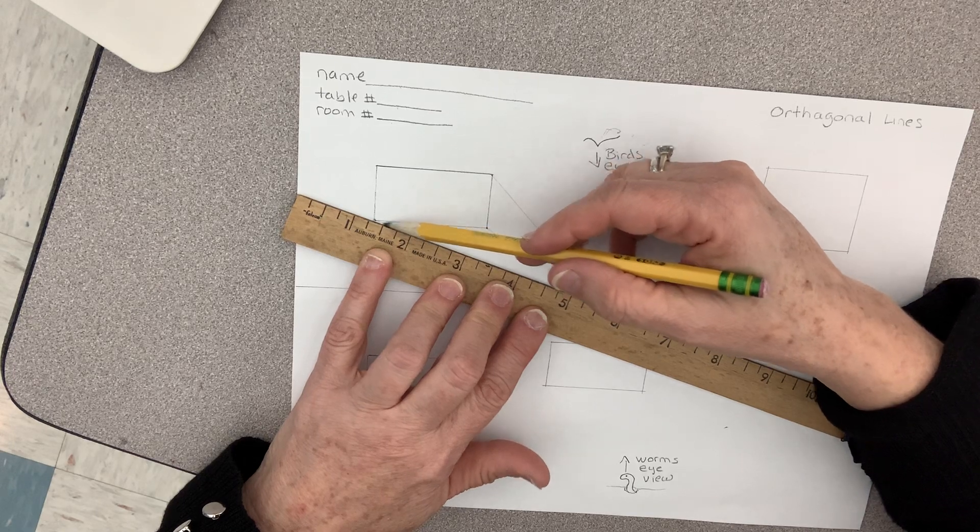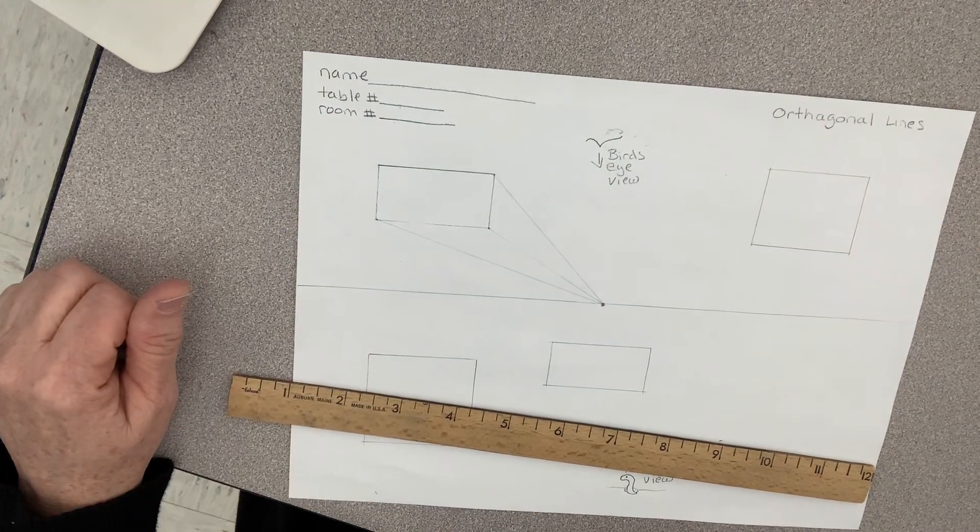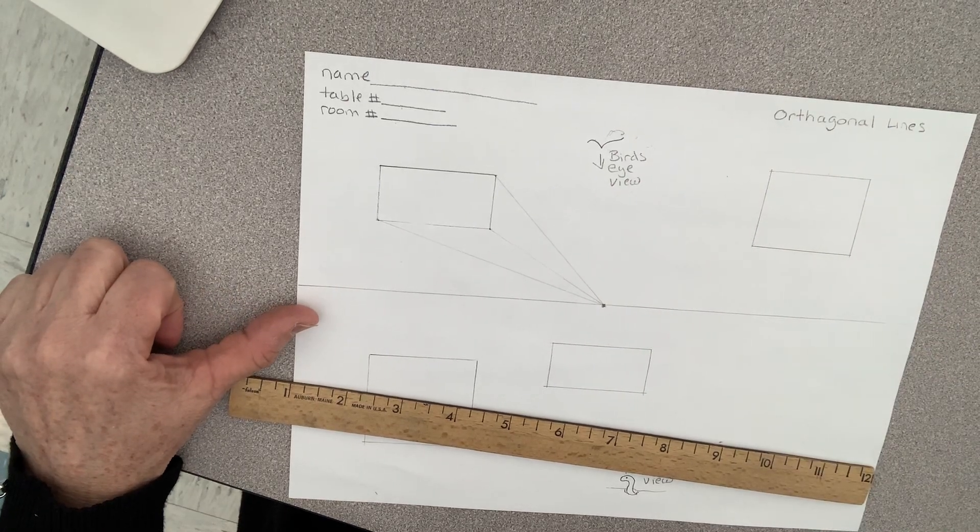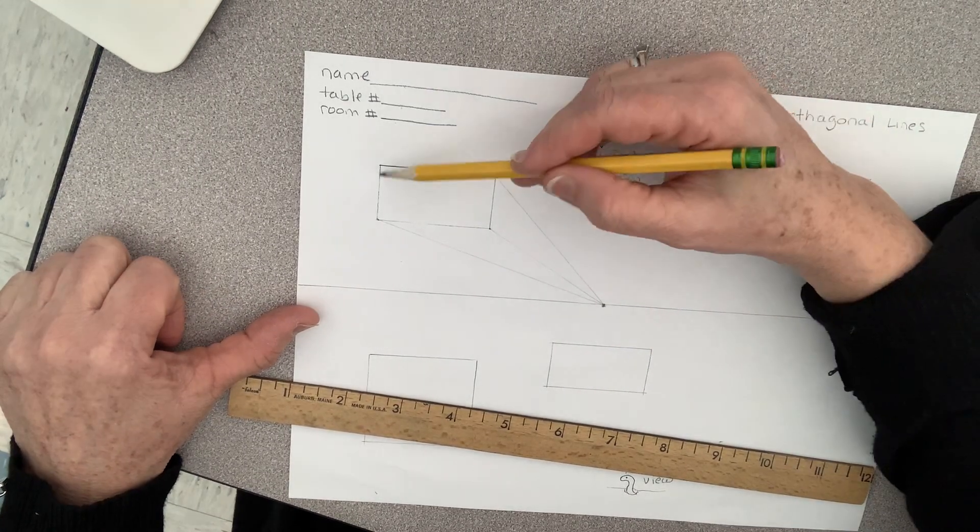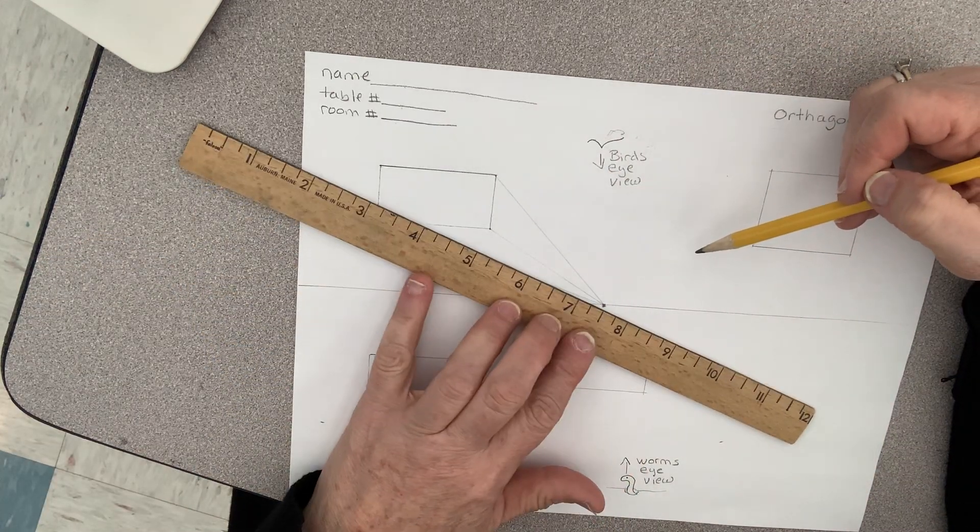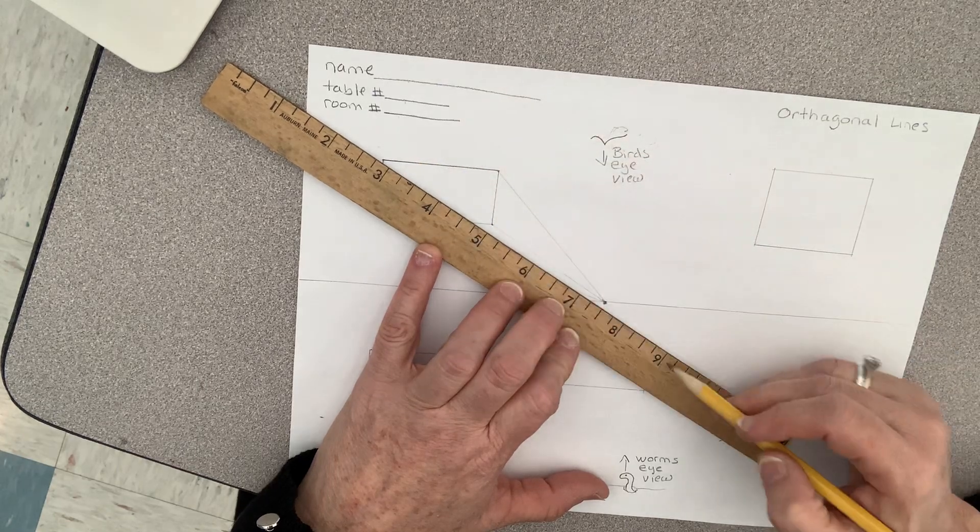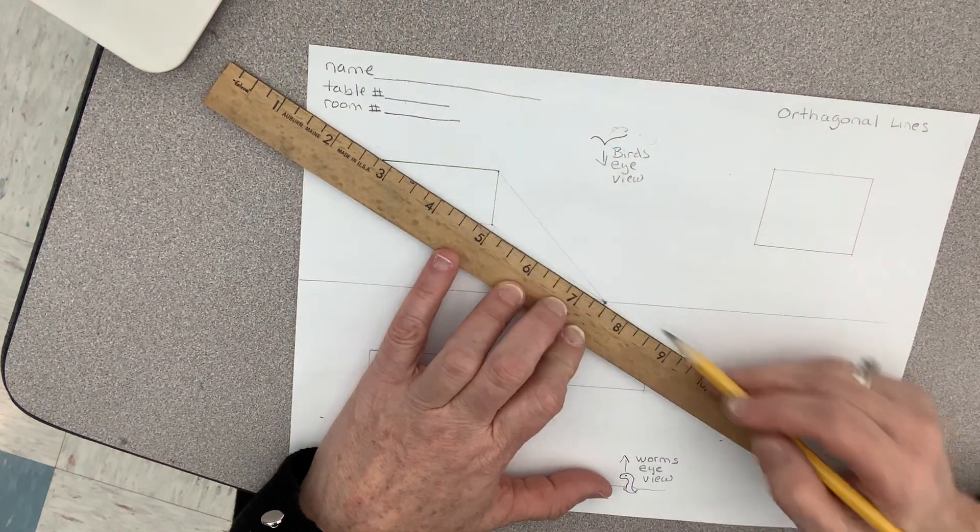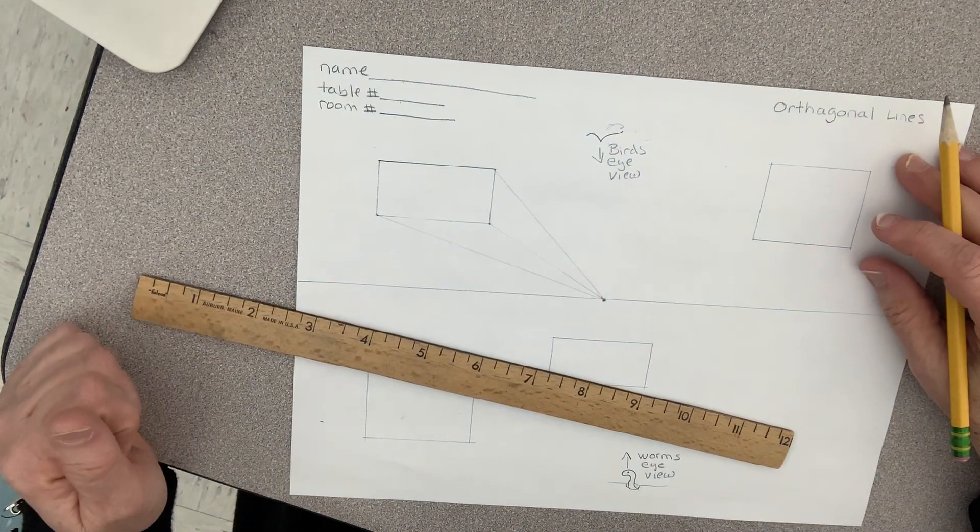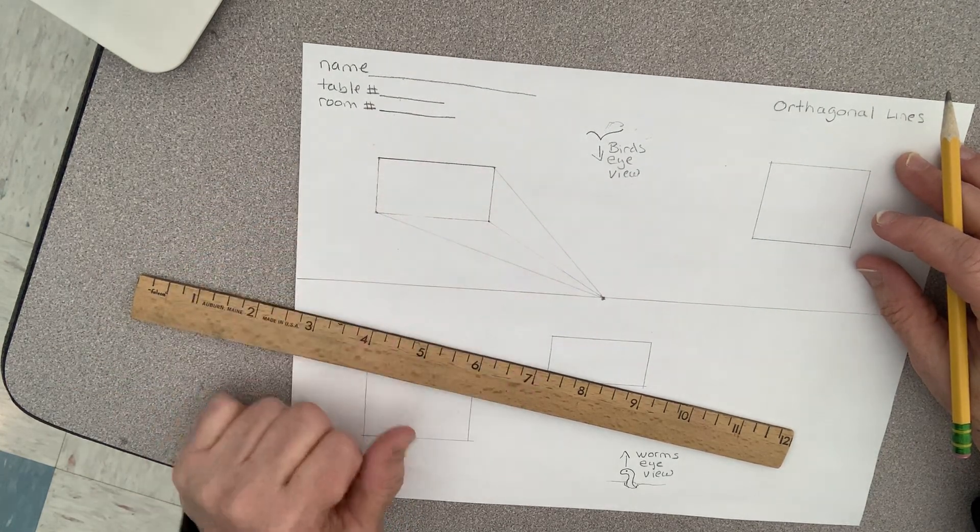My pencil is always touching the ruler and I drag along there. So once you do that, now should I draw a line from here? If I did, it would be going through my box, through my square, and it wouldn't really make sense unless I have an open box, which we're not doing.